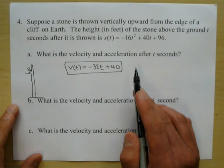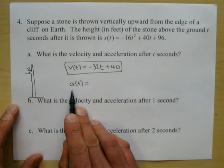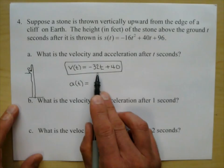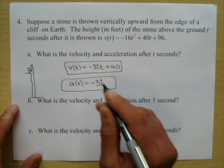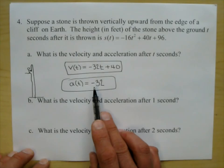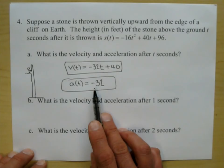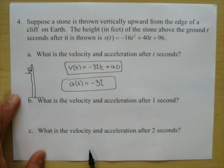Now let's find the acceleration function. The acceleration is the derivative of the velocity — a of t, also written s double prime or v prime. The derivative of v of t is negative 32 plus zero, so a of t equals negative 32. The acceleration is constant. When you throw something up in the air, the change of velocity is always negative due to gravity — this is the gravity constant.